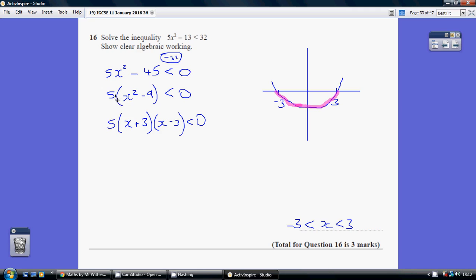We then factorise the left hand side. So 5 open bracket x squared minus 9 is less than 0. We've then just got to realize this is the difference between two squares. So x squared minus 9 is x plus 3, x minus 3.